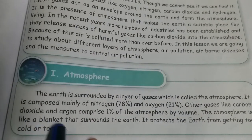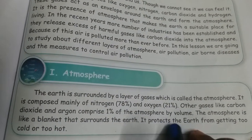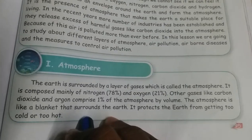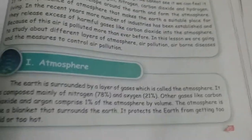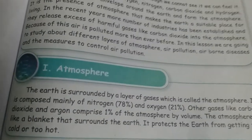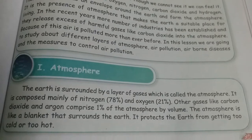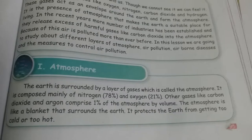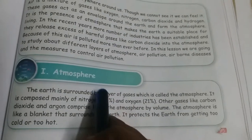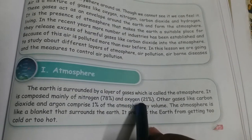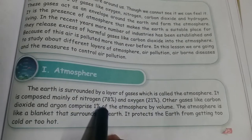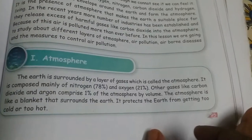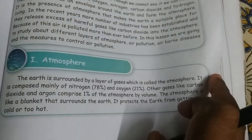The atmosphere is like a blanket that surrounds the earth. It protects the earth from getting too cold or too hot. The main mixture is 78% nitrogen and 21% oxygen, with 1% other gases like carbon dioxide and argon.